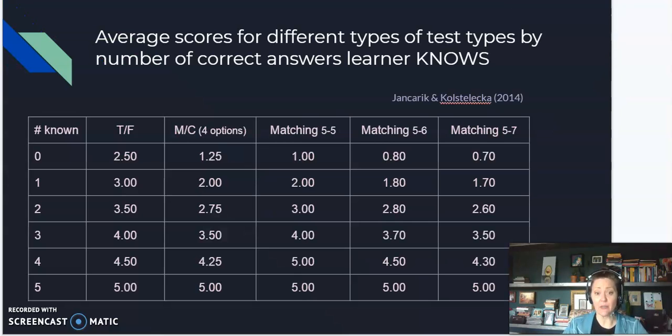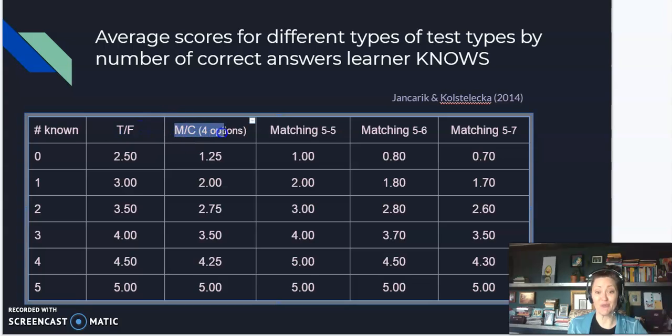Now, in this table we have a number of different types of selected responses: true and false, multiple choice with four options, matching with five items and five options so it's a one-to-one match, matching with five test items and six options so one extra distractor, and matching with two extra distractors.